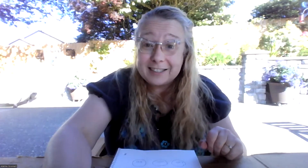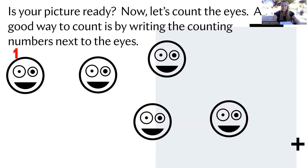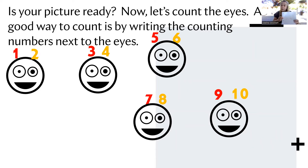Now let's take a look at what we do next. If your picture's ready, let's begin. We're going to count the eyes. A really good way to count is to write counting numbers next to the eyes. So I'm going to add counting numbers on the screen — I would love it if you would also write the counting numbers next to the eyes in your picture. Ready? One, two, three, four, five, six, seven, eight, nine, ten. Ten eyes! If you need extra time, you can pause the video here to copy the numbers.